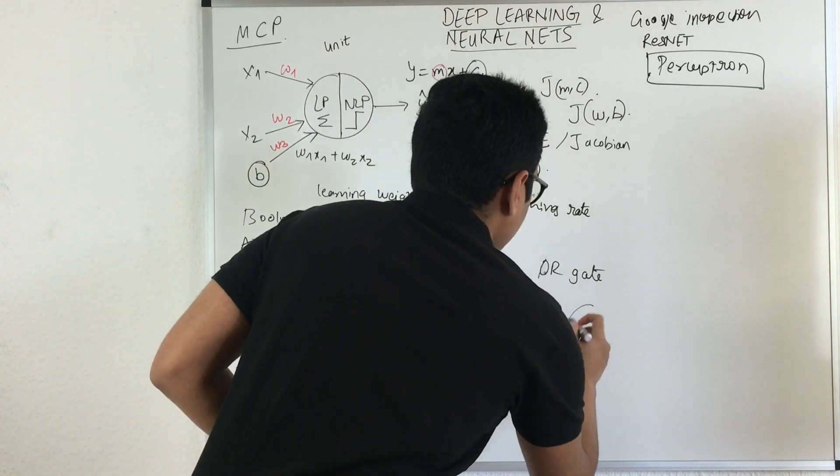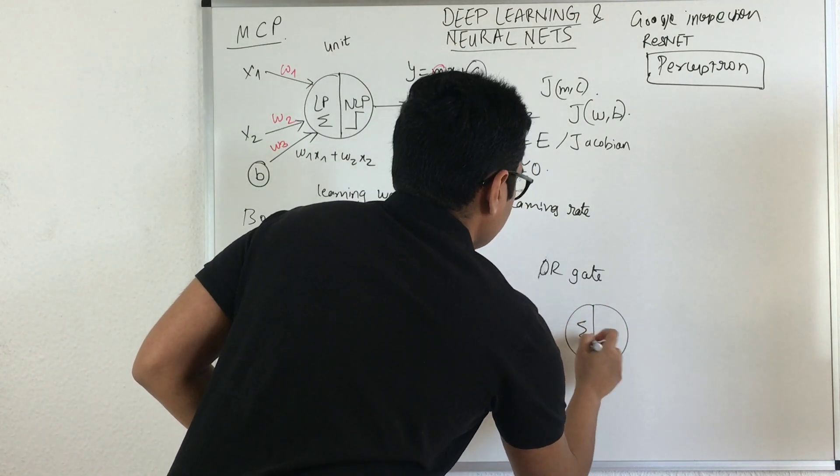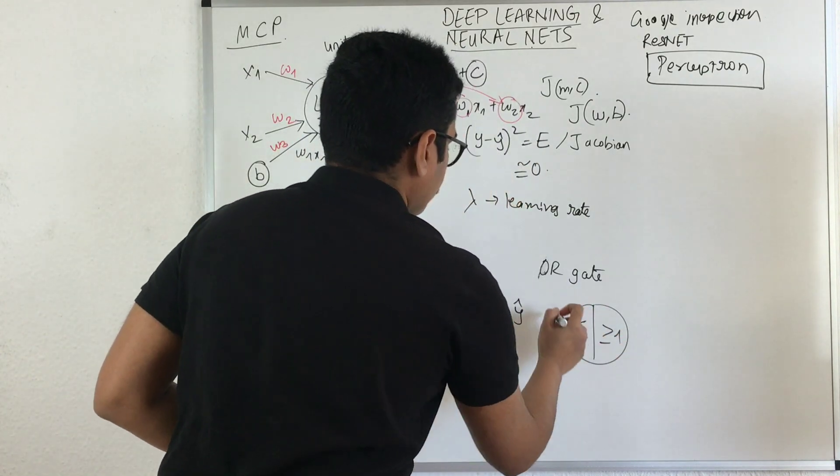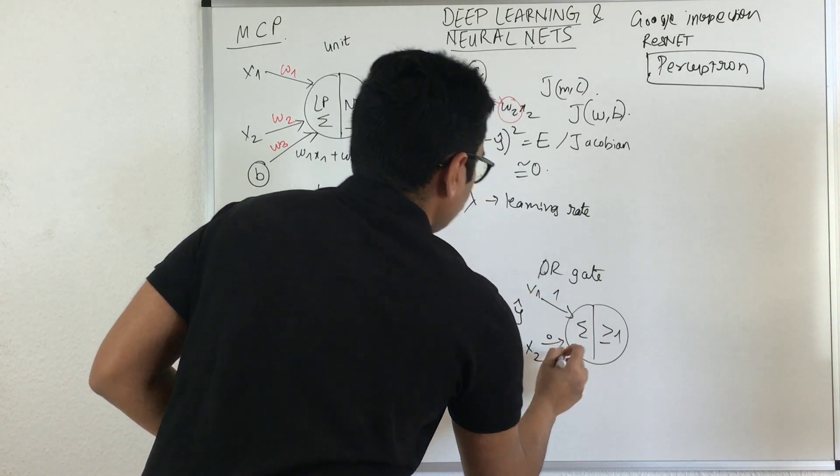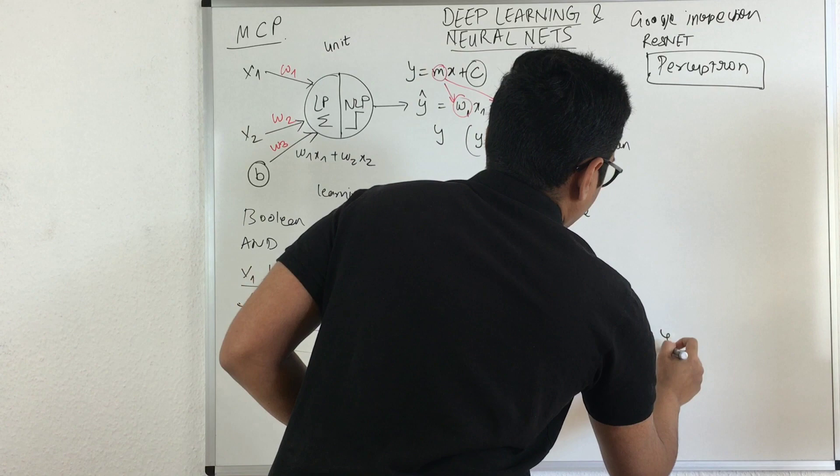Your neural network just changes like you have greater than or equal to 1. You have X1, 1 and 0. These are the two inputs I'm providing and I have Y cap.